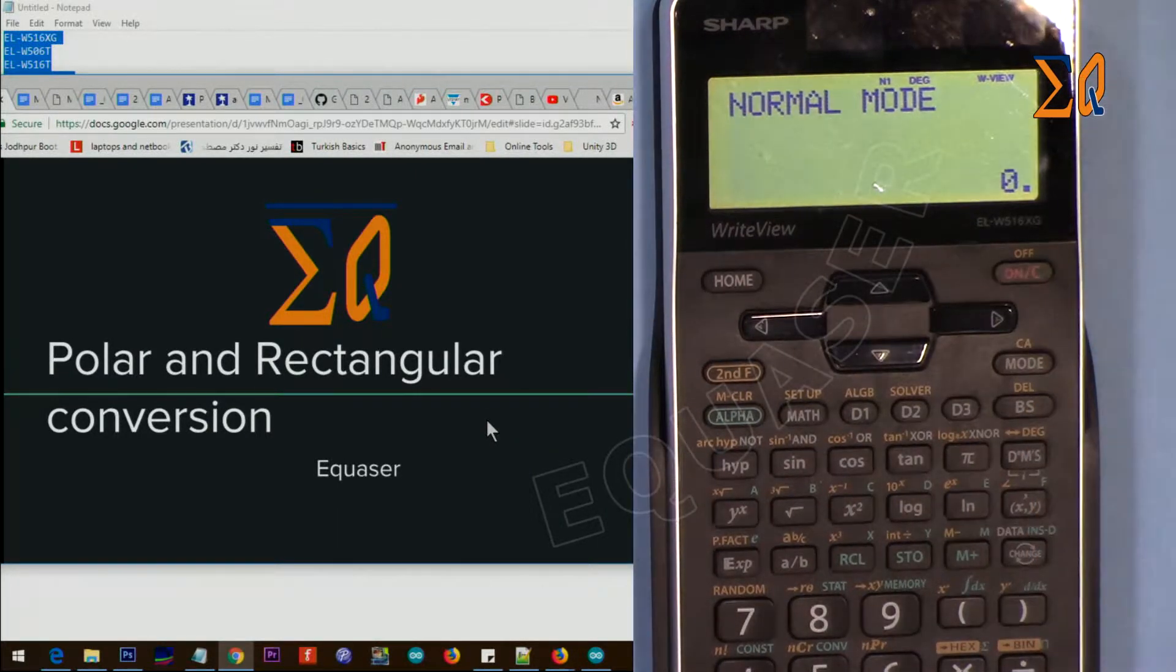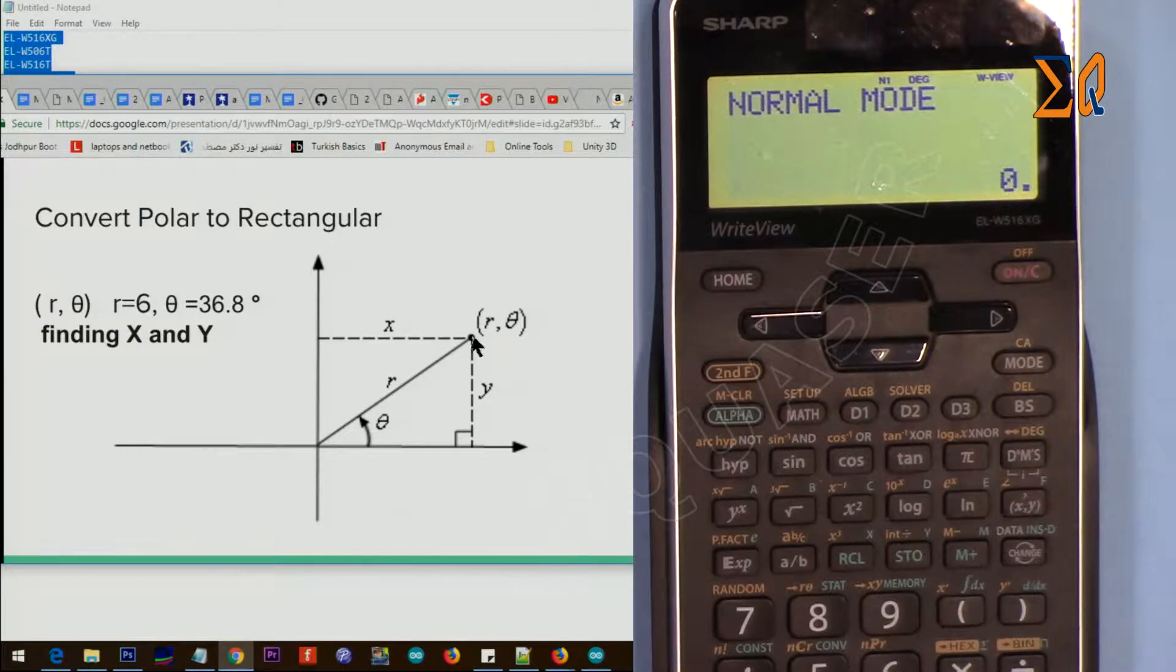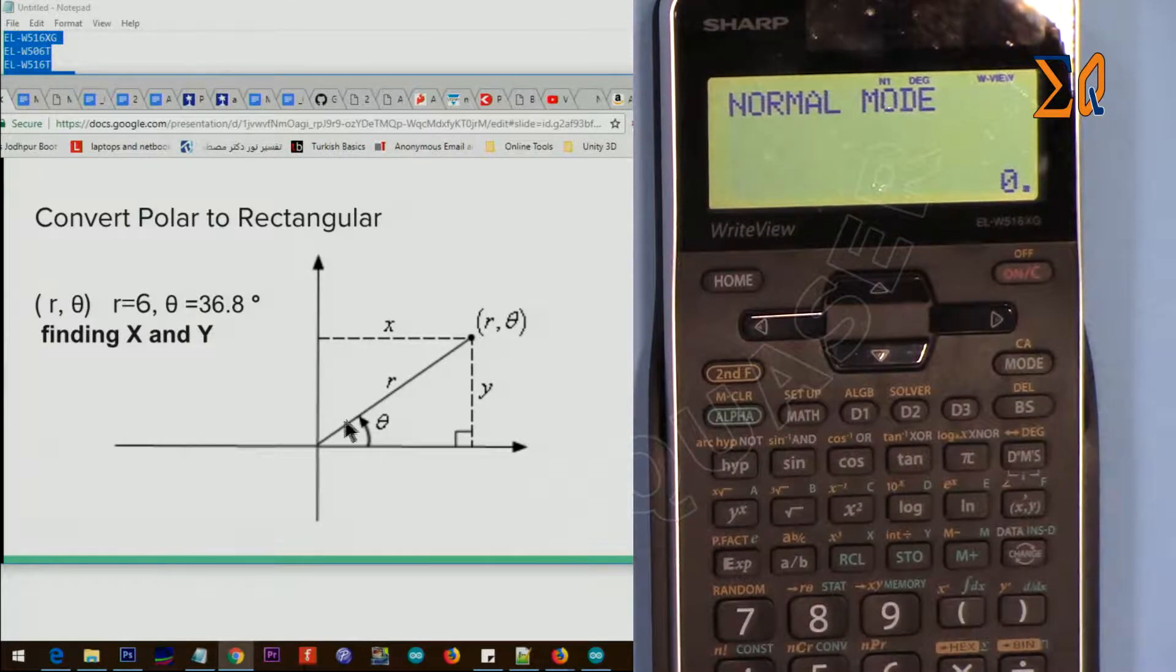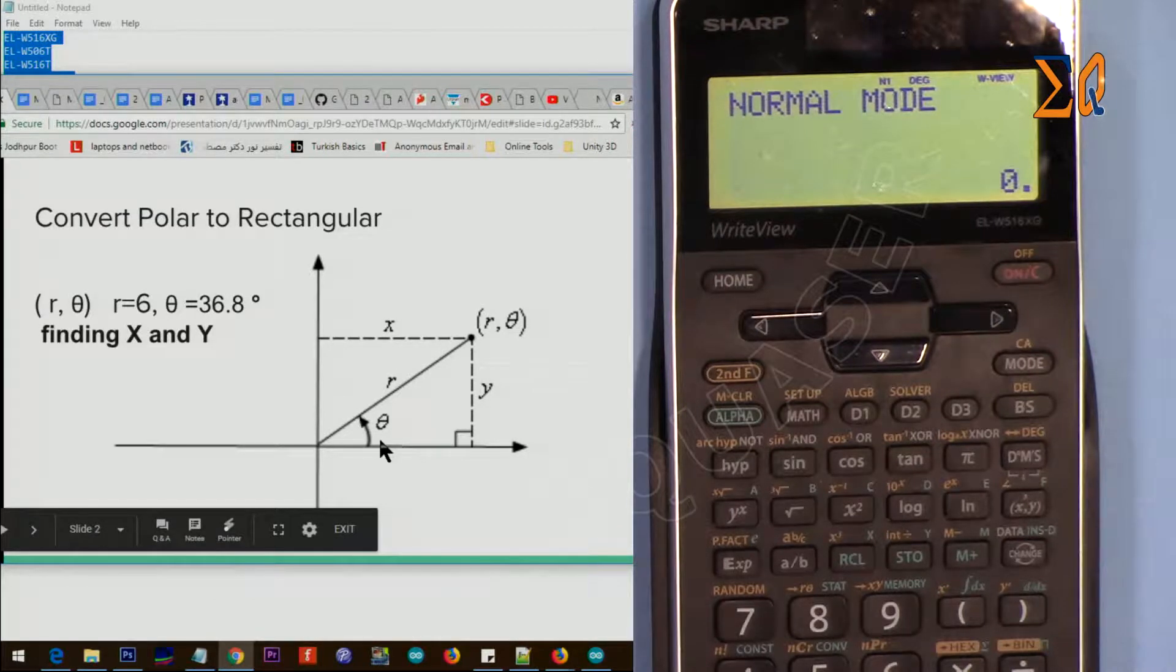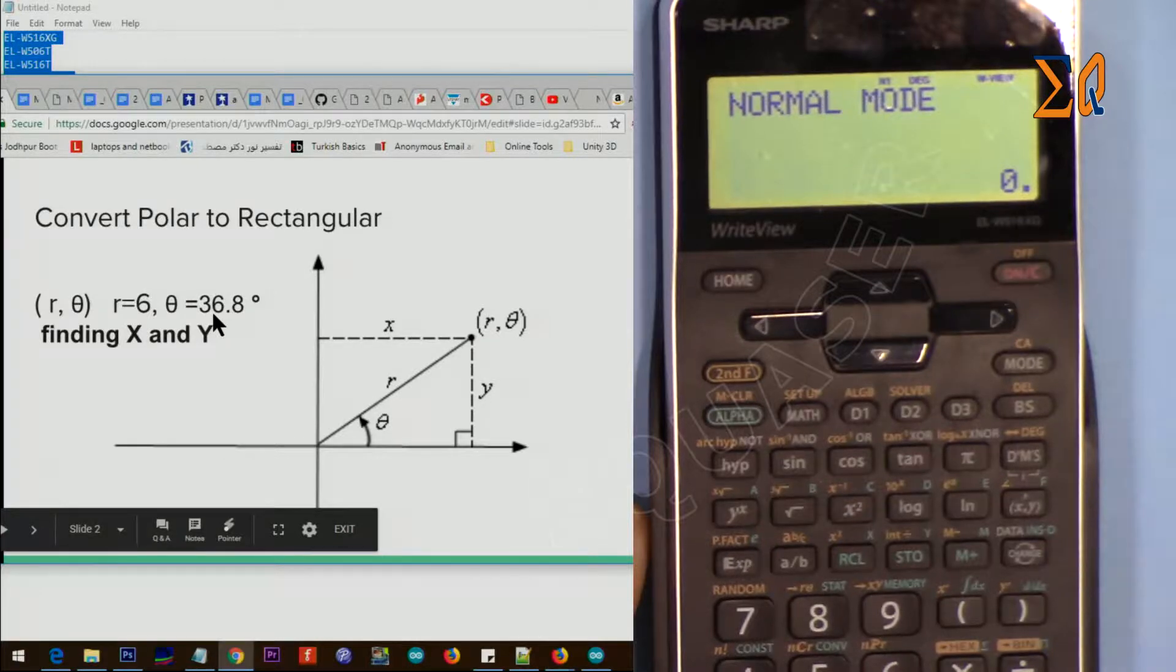So for example, in this diagram, as you can see, we know r and we know theta. For this diagram, we want to find the length of this X from here to here, which is this one, and we want to see the Y, which is this one. So we want to find the coordinate of this point, but this is now magnitude and then angle. So we have r equals 6 and theta is 36.8.